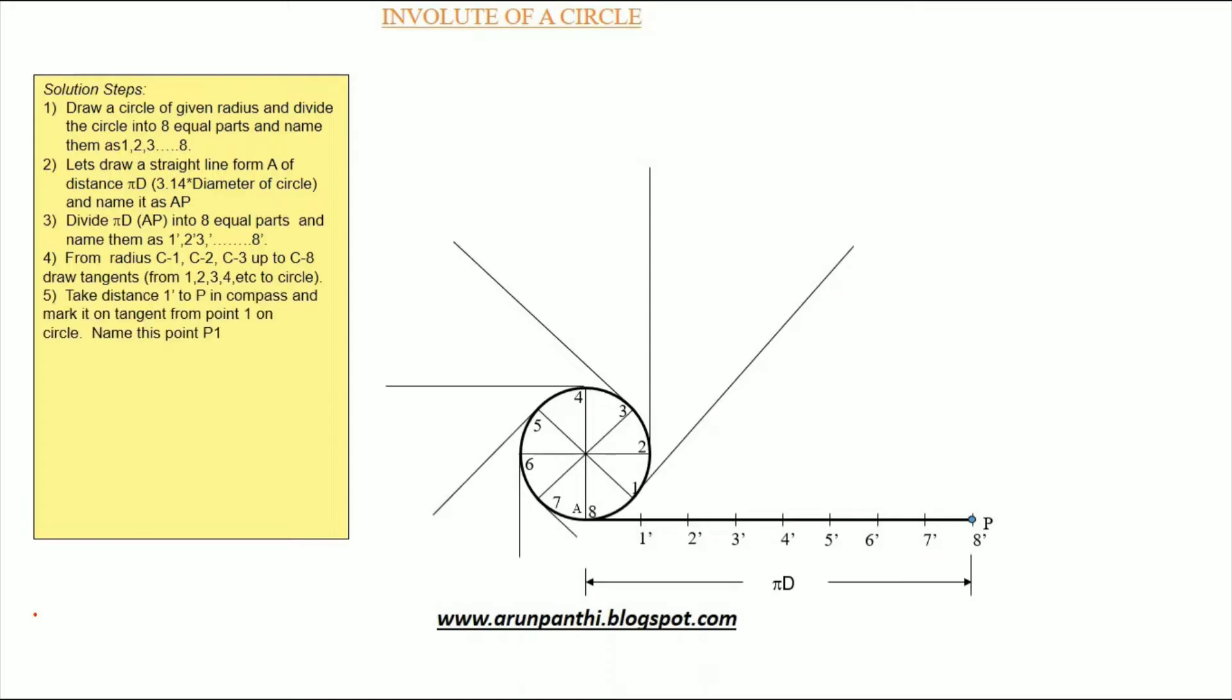Take distance one dash to P in compass and mark it on the tangent from point one on the circle and name the point P1.